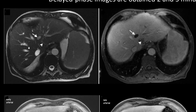This T2 sequence shows a bright signal lesion that is as bright as the CSF and shows no contrast enhancement — this is consistent with a simple liver cyst. Another case shows arterial enhancement, consistent with HCC.